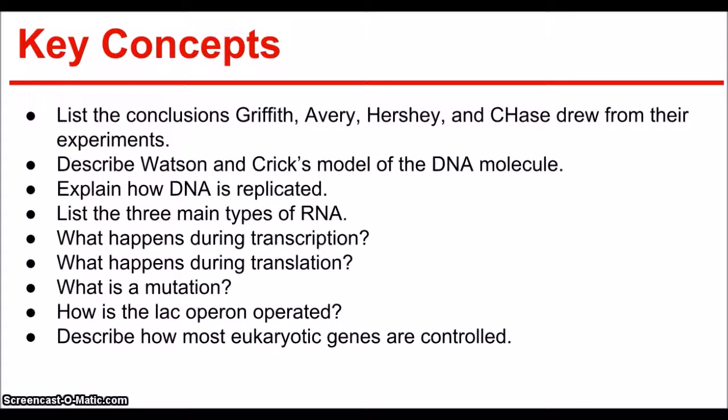The key concepts: List the conclusions that Griffith, Avery, Hershey, and Chase drew from their experiments. Describe Watson and Crick's model of the DNA molecule. Explain how DNA is replicated. List the three main types of RNA. What happens during transcription? What happens during translation? What is a mutation? How is the lac operon operated? How is it turned on and off? And describe how most eukaryotic genes are controlled. Alright, that's actually it for chapter 12.